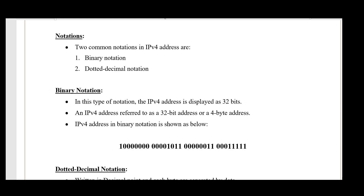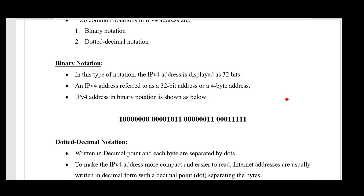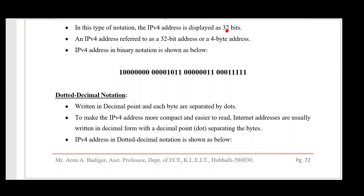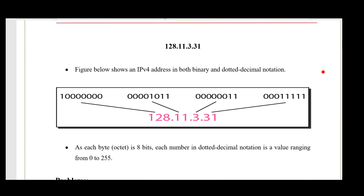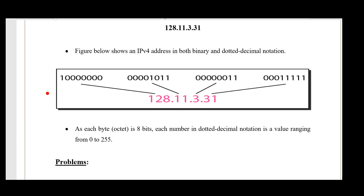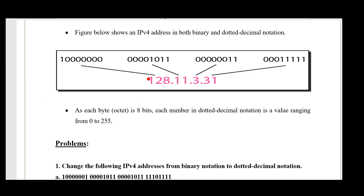An IP address can be represented in binary notation or dotted decimal notation. A 32-bit address is divided into four groups of 8 bits each — since 8 times 4 equals 32. In binary representation, each 8-bit group is written as ones and zeros. In dotted decimal representation, each 8-bit group is converted to a decimal number and the four values are separated by dots. Each byte ranges from 0 to 255, since 2 to the power of 8 is 256.